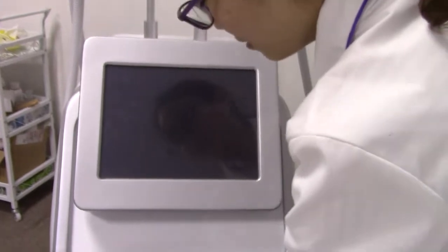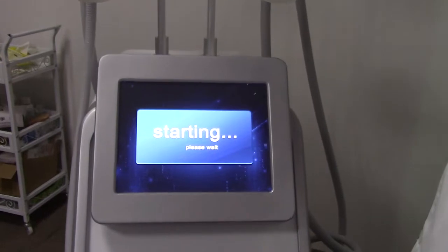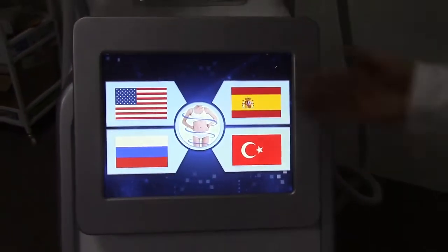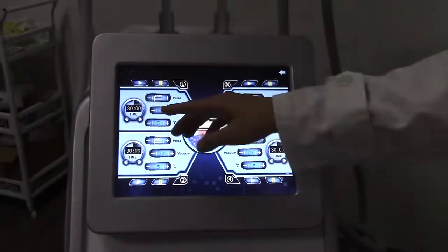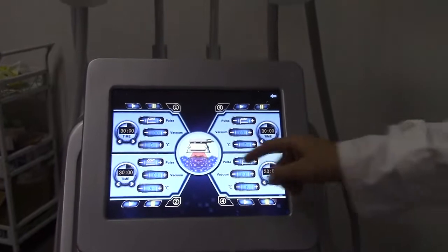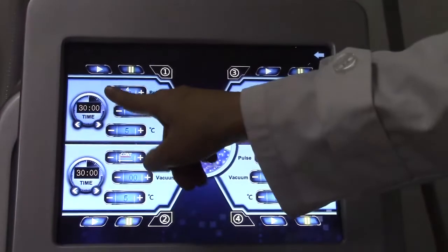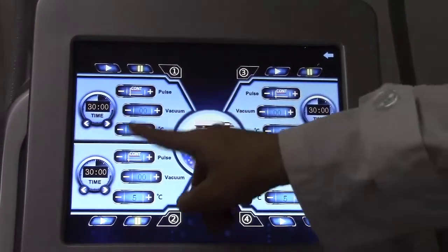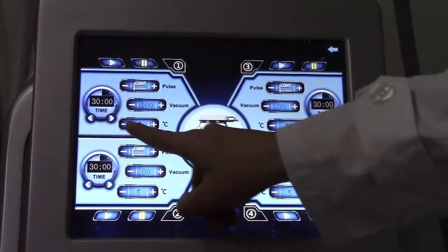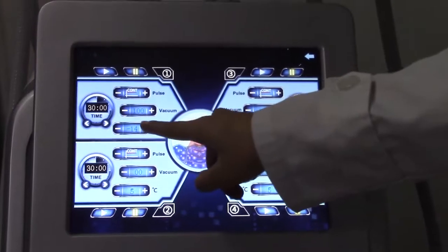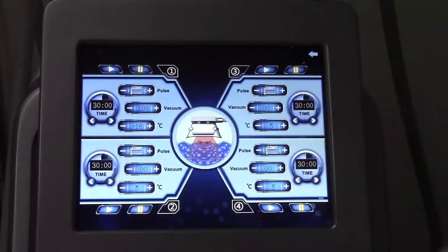Now we open the machine. There are four languages for this machine - we choose English. The four handle pieces can work together and there are four multiple treatments. There are continuous mode and pulse mode. The vacuum can reach 100 kPa and the temperature can reach minus 16 degrees.